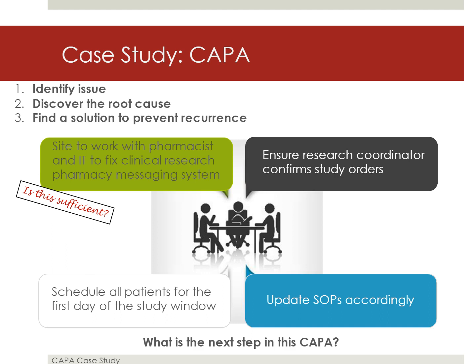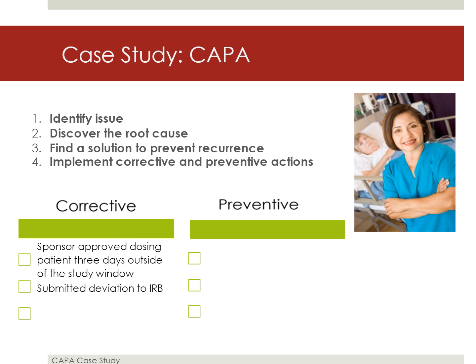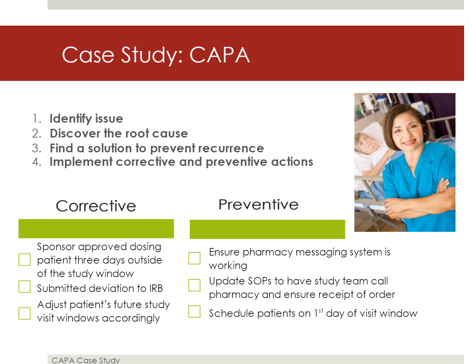What is the next step in the CAPA? The research team must implement the corrective and preventive actions. In this case, the study team already has addressed the problem with two corrective actions. They have requested and received the sponsor's approval to administer the study drug up to three days outside of the study window, and they have reported the protocol deviation to their IRB. The additional corrective action is for the study team to adjust this participant's future infusion windows by one day. Finally, the team will need to implement the preventive actions discussed earlier to prevent these types of incidents from occurring in the future.